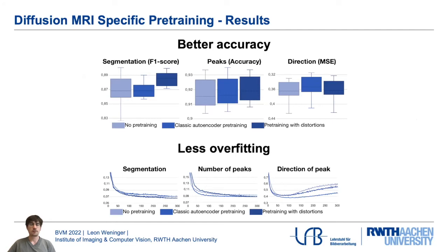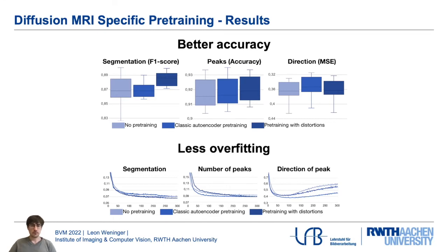These final scores were averaged over four different training runs, each with eight test images. Our proposed training scheme outperforms random initialization in all three cases and also outperforms classic autoencoder pre-training in two of the three cases. In the bottom row, we further see the validation loss during training over the course of the epochs, and we see that with our pre-training procedure the training process is more consistent and shows less overfitting behavior.